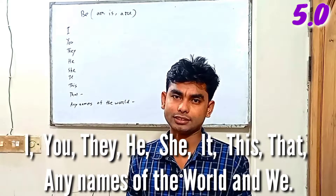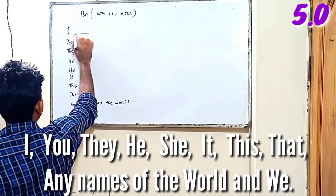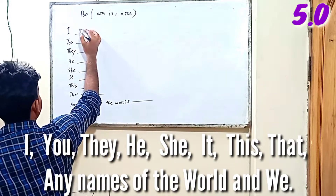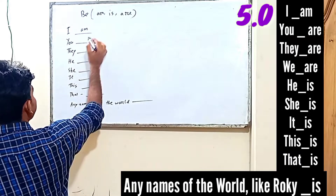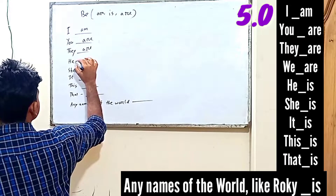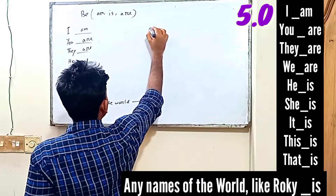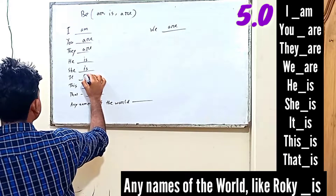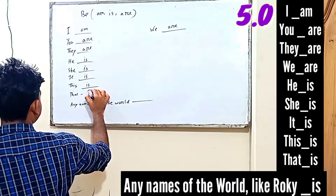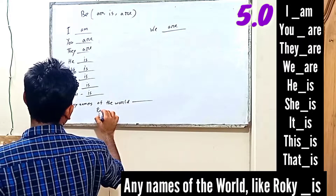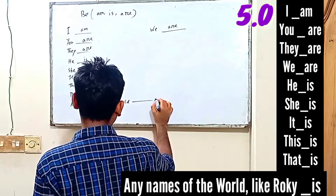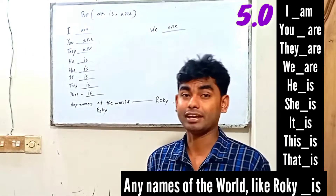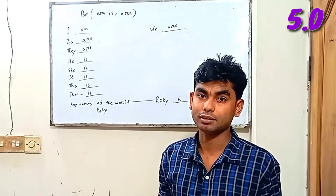Now after 'I', 'you', 'they', 'he', 'she', 'it', 'this', 'that', and names of the word — after 'I', I use 'am'. Then 'you are', 'they are', 'we are', 'he is', 'she is', 'it is', 'this is', 'that is', and for names like Rocky — 'Rocky is'.